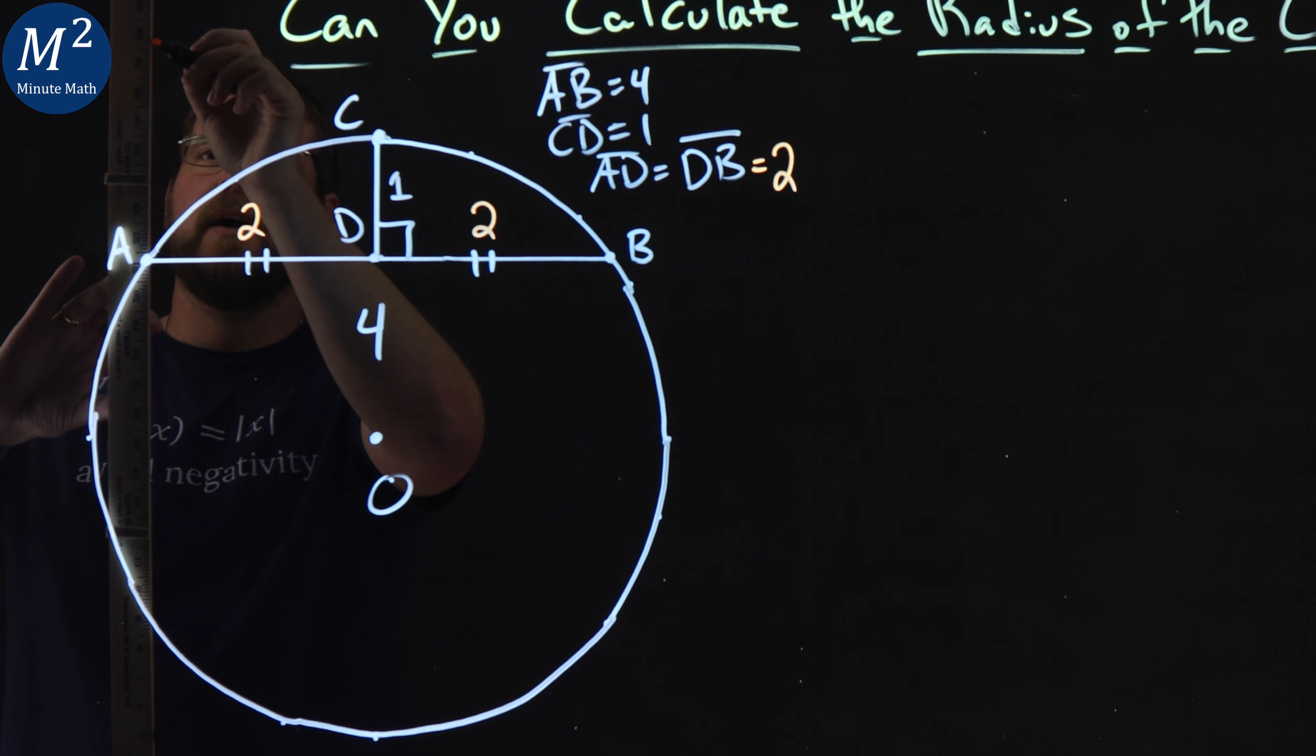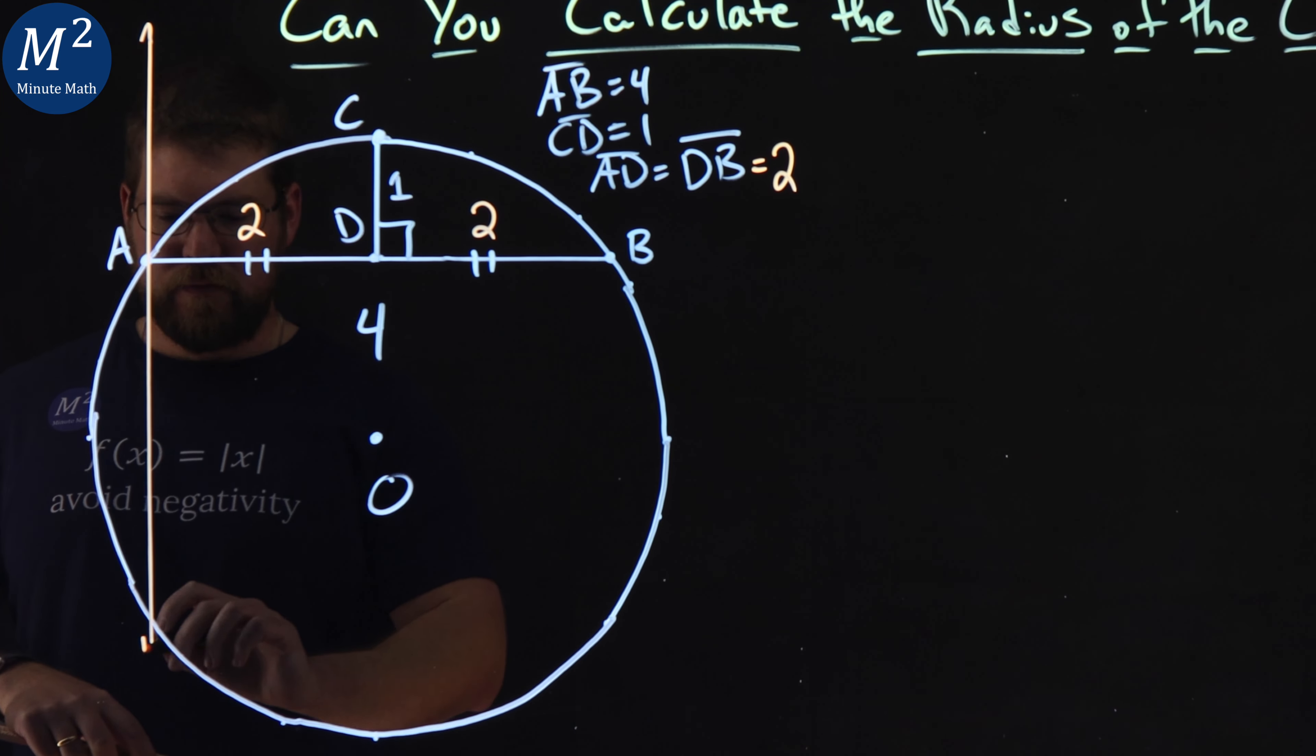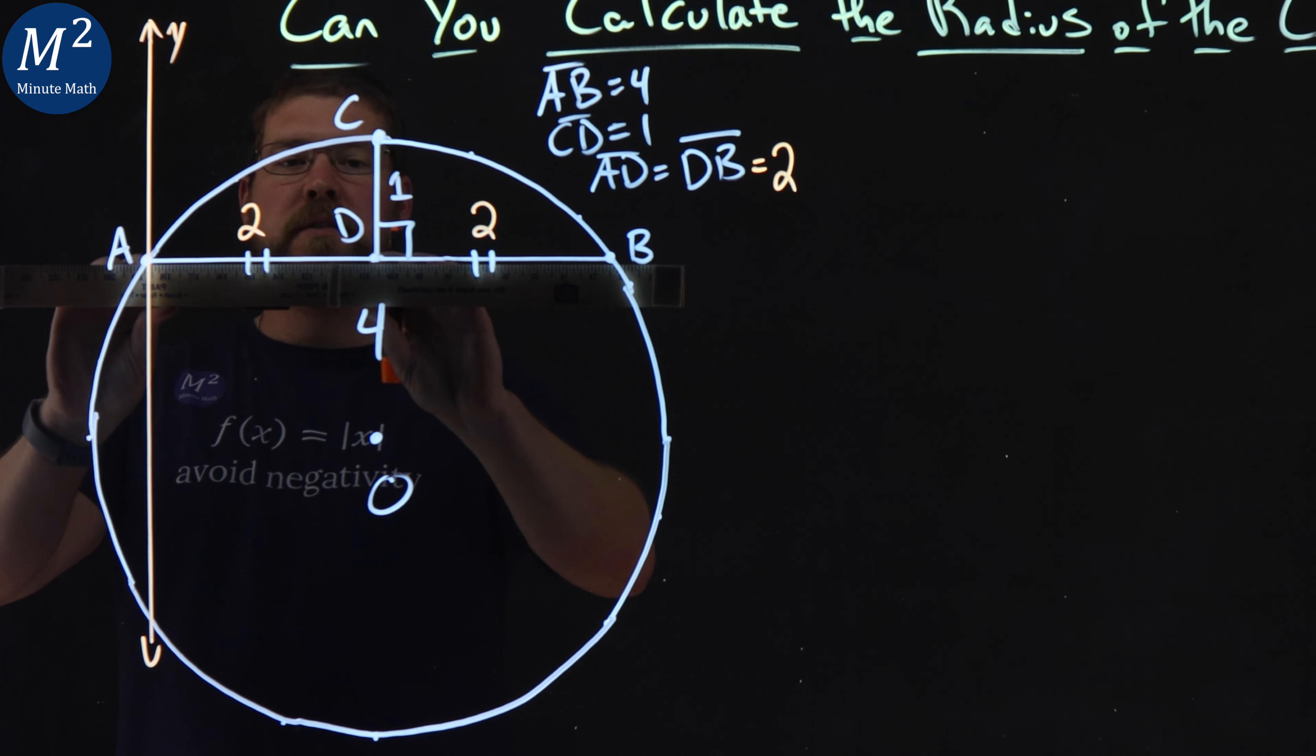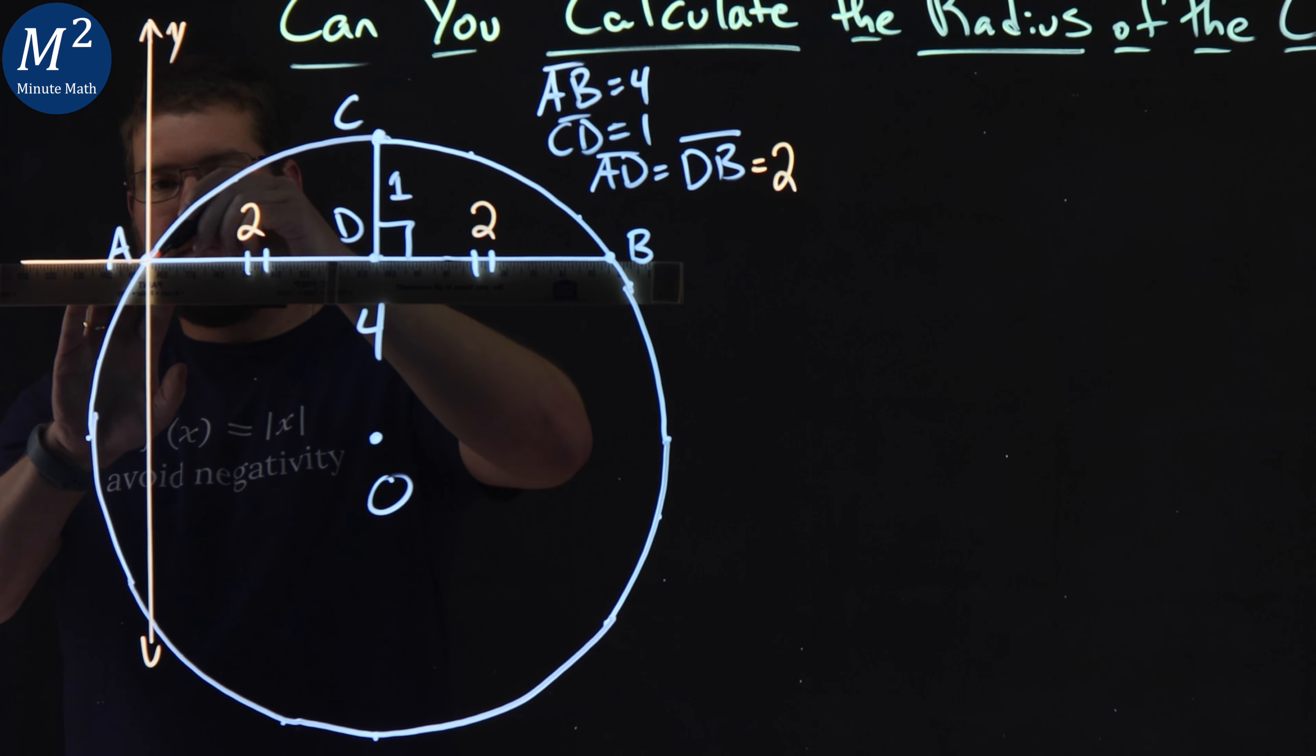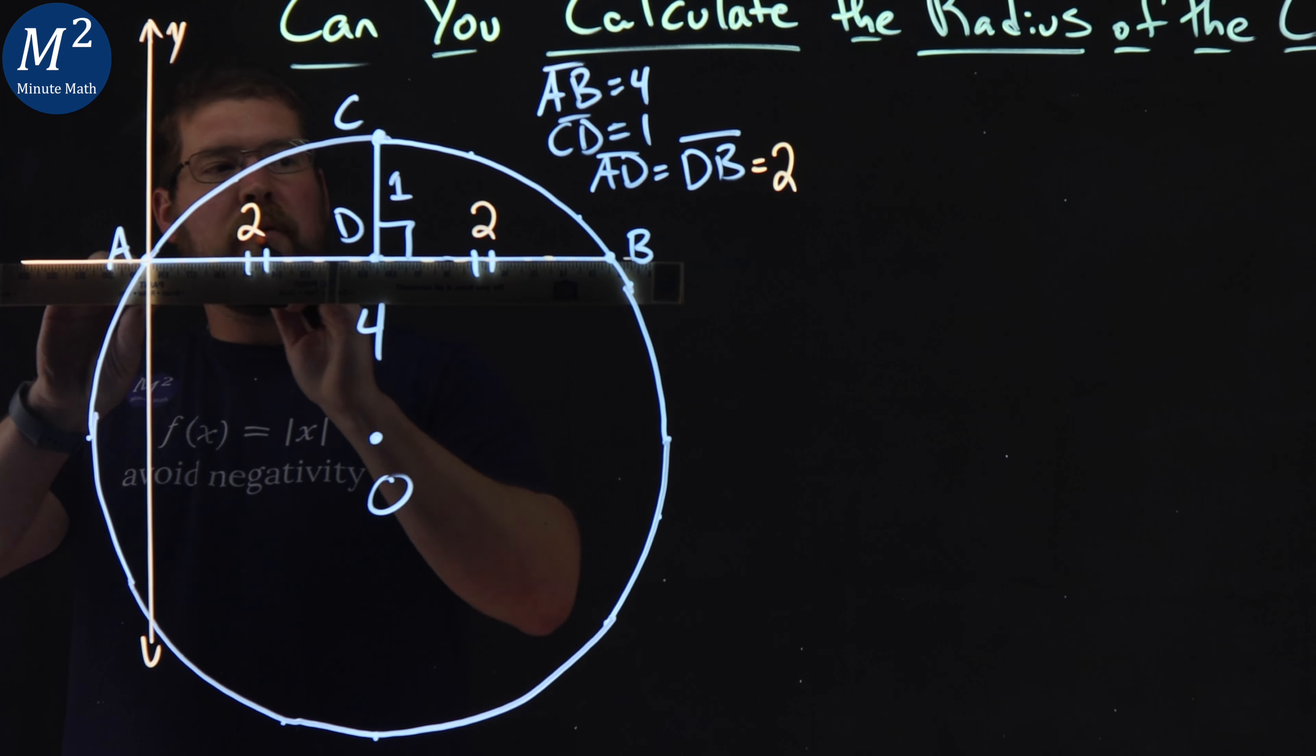So if I make a little line here, call this our Y axis. And our X axis can be across here, that line AB. And I'll make a little dash here so you can see.